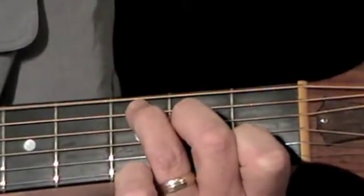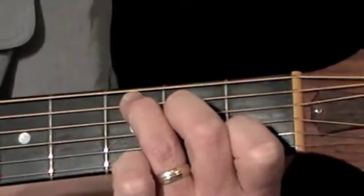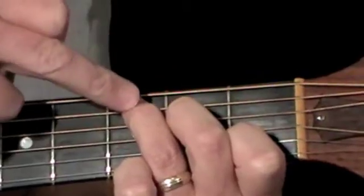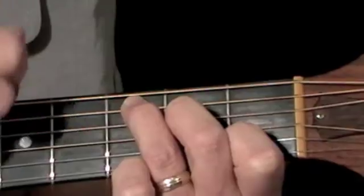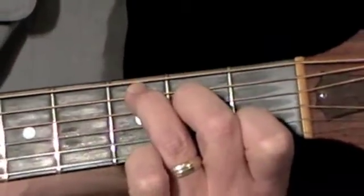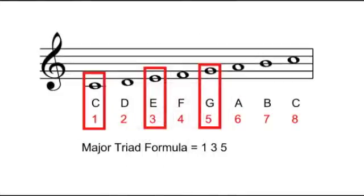So when I strum that, although I'm actually strumming six strings, it's only giving me three different notes: C, E, and G. If we analyze these notes against the major scale based on the root note of the chord — in this case C — we see that the notes of the chord are notes 1, 3, and 5 on the major scale.